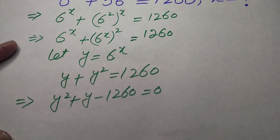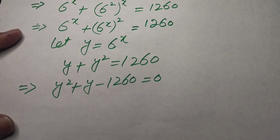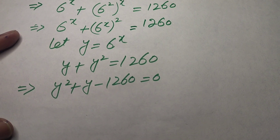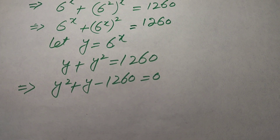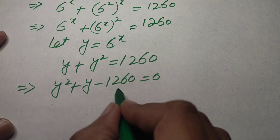We rearrange this term and write it as y squared plus y minus 1260 is equal to 0. Now we will make the factors of this expression.